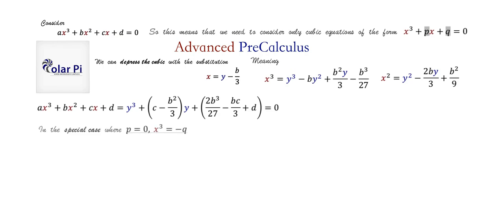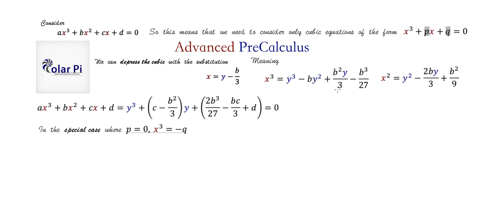Starting with this depressed cubic, let's break it into two cases: one where p = 0 and another where p ≠ 0. If p = 0, it's quite simple — we move q to the other side to get x³ = -q. Since -q is a complex number (real numbers are complex numbers too), every complex number has three cube roots, so we get three complex roots.